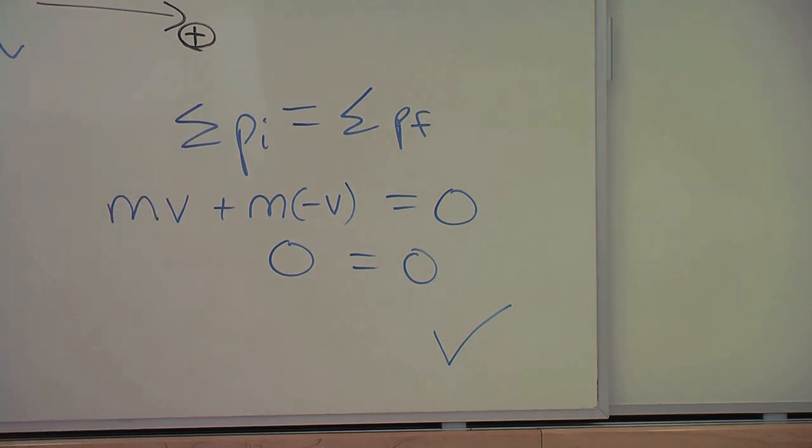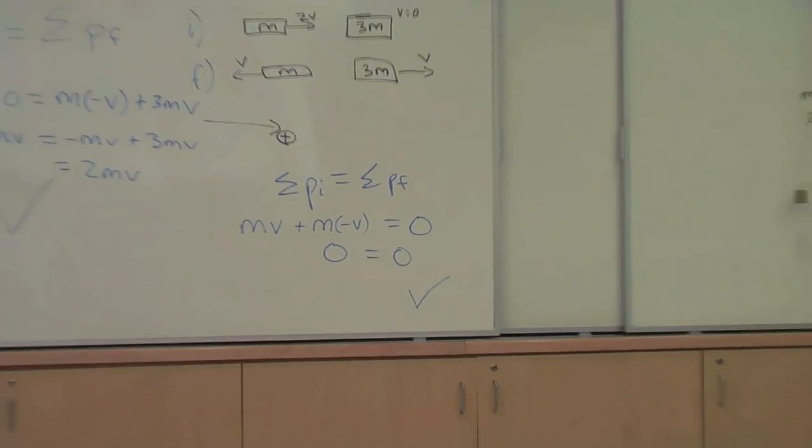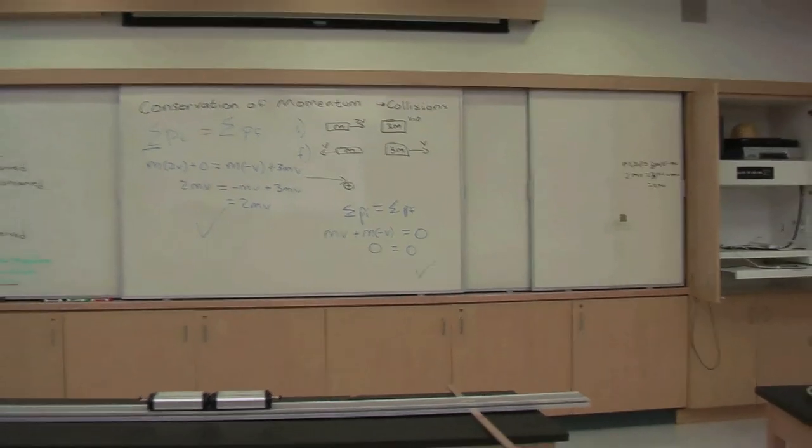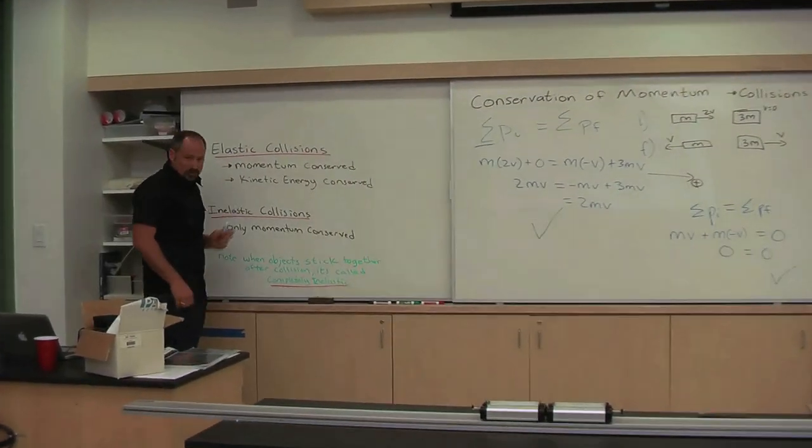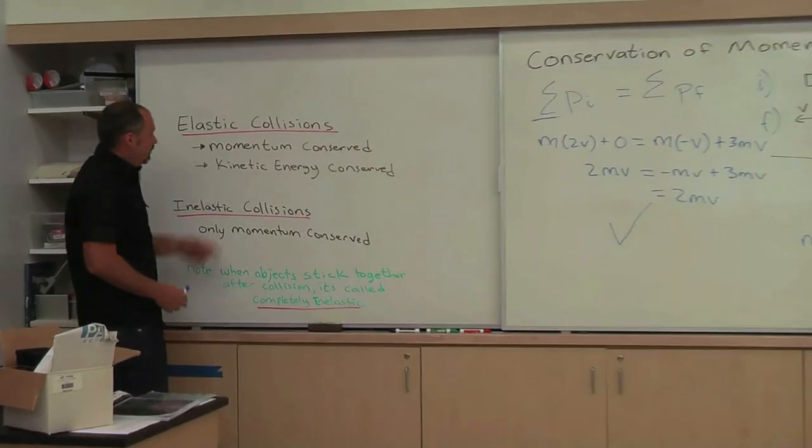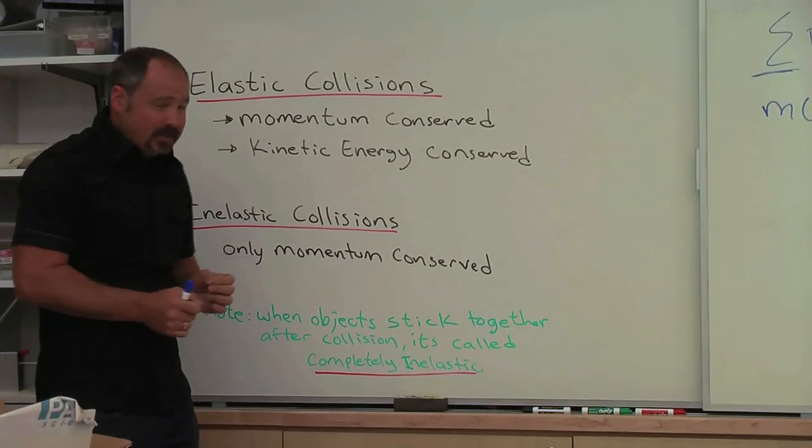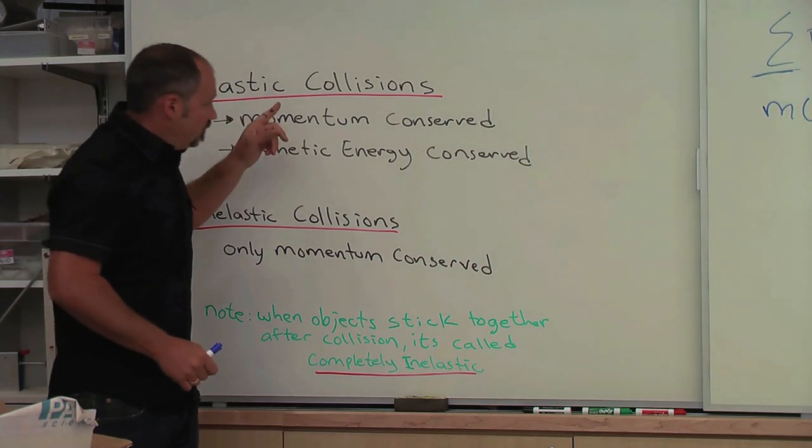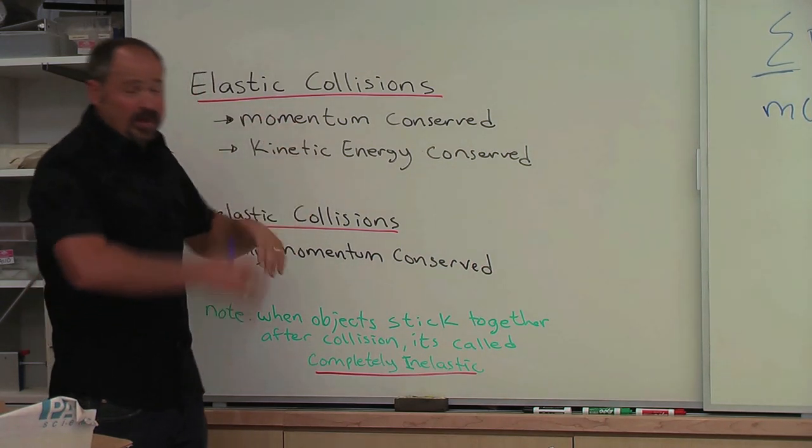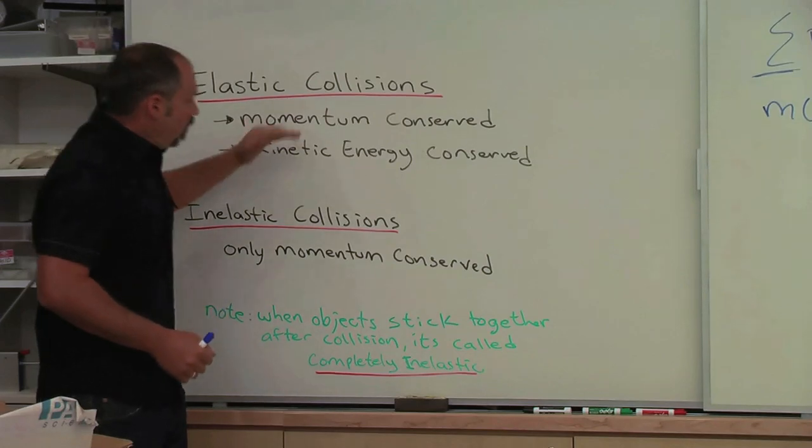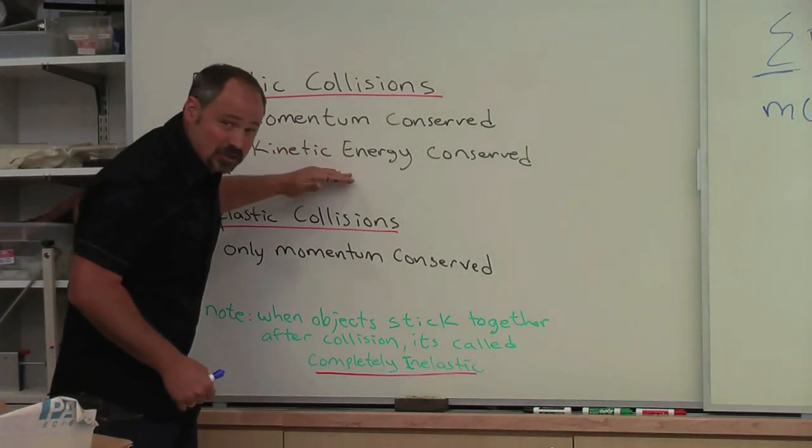And let me go through these different types of collisions because it's very important. Elastic collisions are defined by, in the collision, not only is momentum conserved, momentum is always conserved in the collision, but also kinetic energy is conserved.